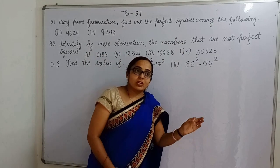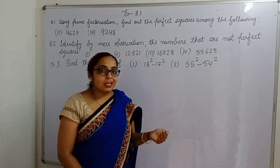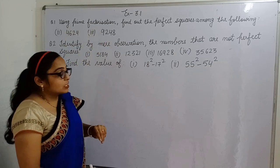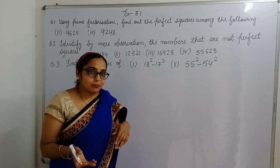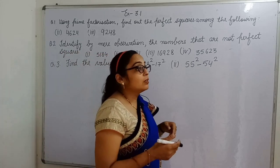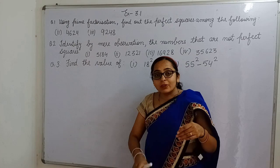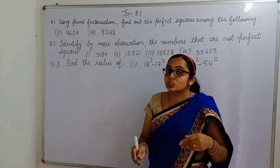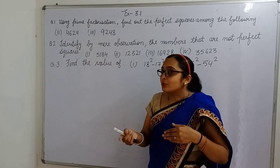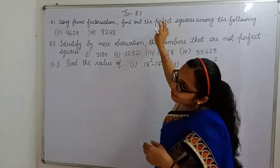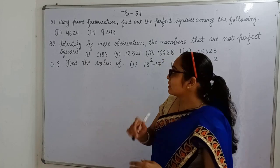In our previous class we did question first, but due to request of some students I am telling you again that using prime factorization we have to tell which number is perfect square. How can we find out? Students, prime factorization - if all the prime numbers are in pairs, it means that is a perfect square. If all the prime numbers are not in pairs, it means that is not a perfect square number.